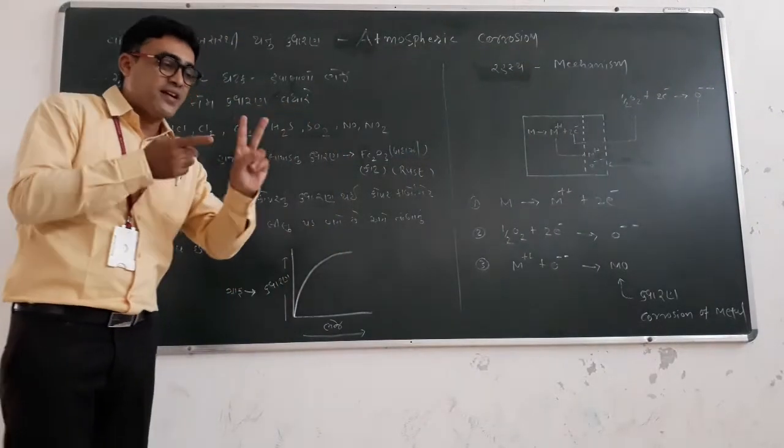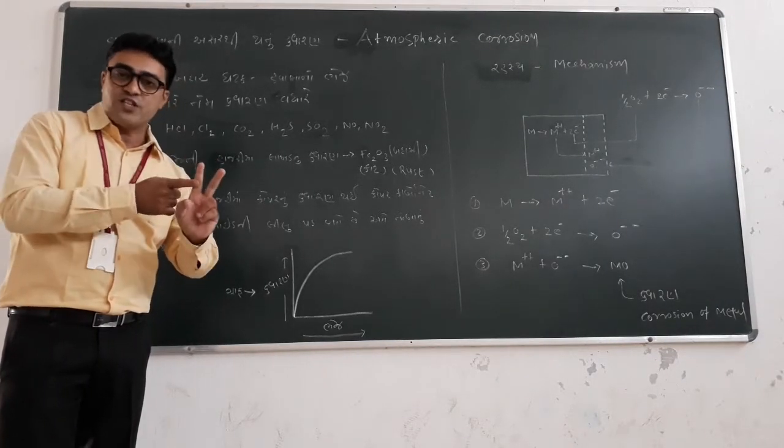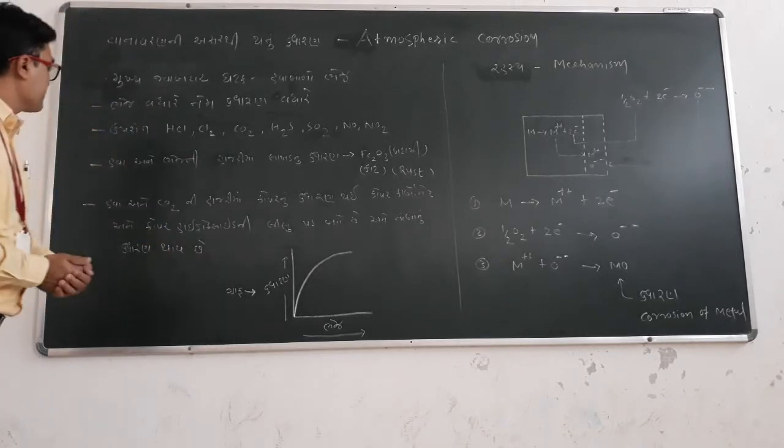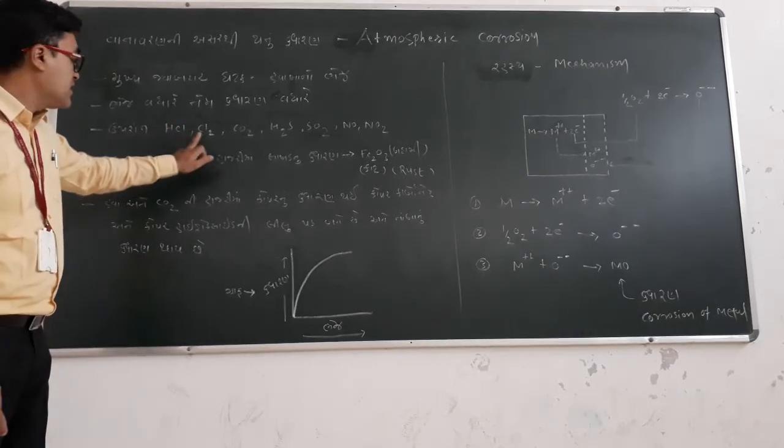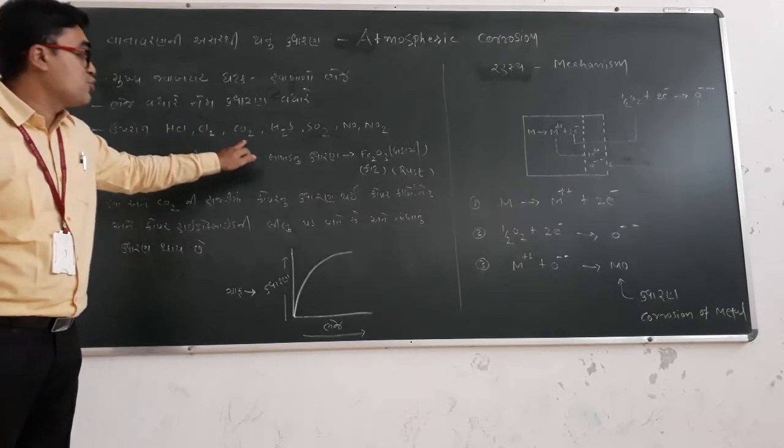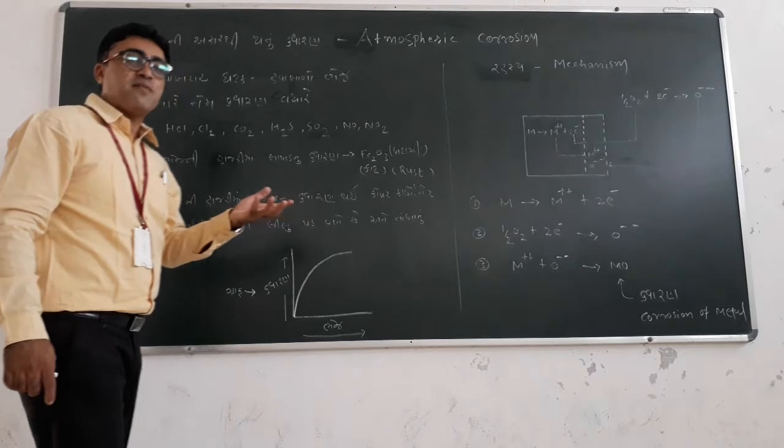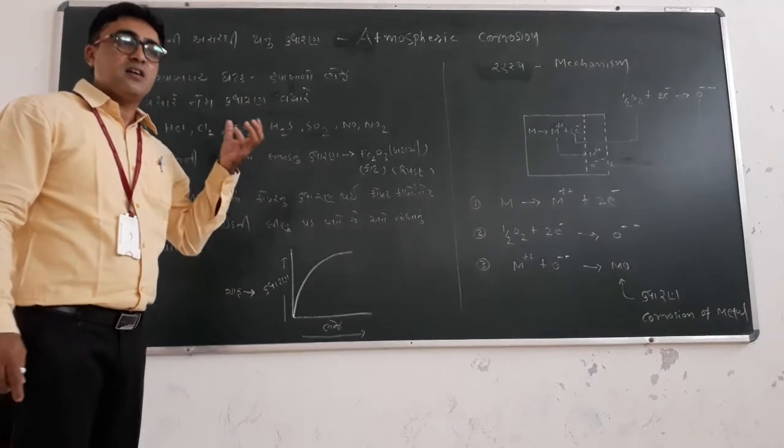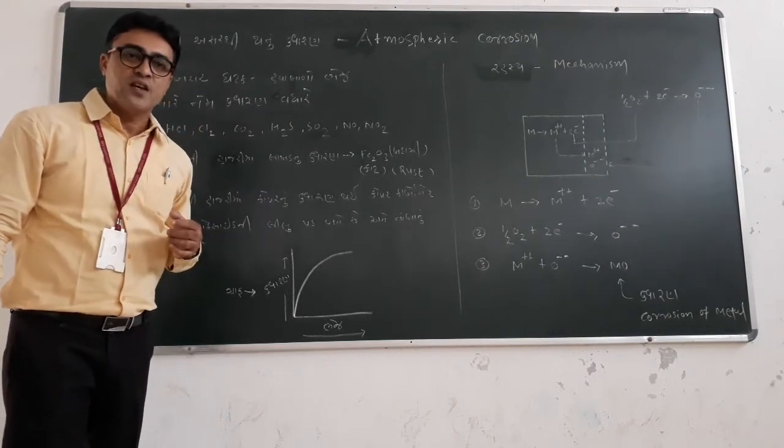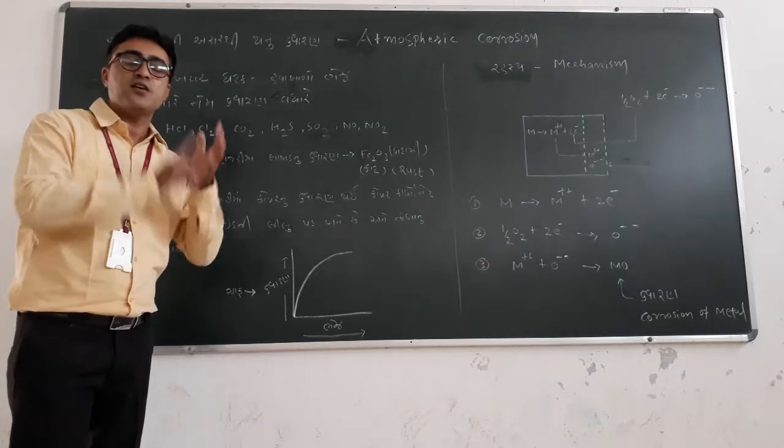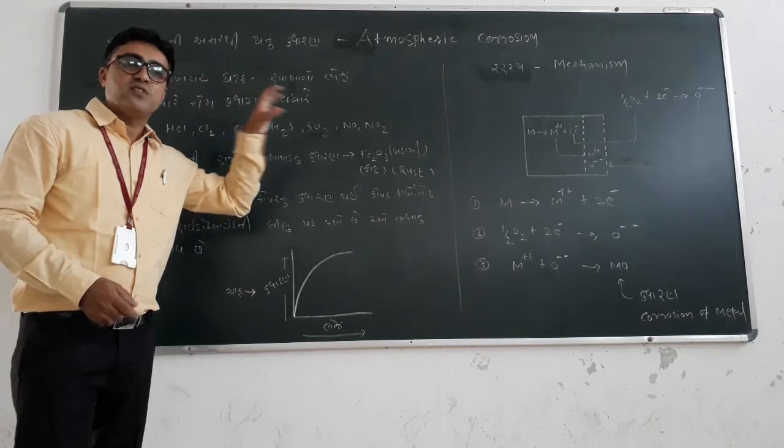The two most responsible factors for the corrosion of metal are oxygen and moisture. There are gases like HCl, Cl2, CO2, H2S, SO2, NO, NO2. But moisture is the most effective constituent of corrosion of metal.